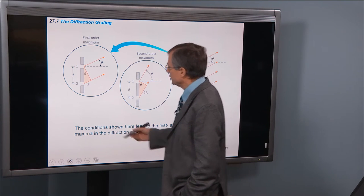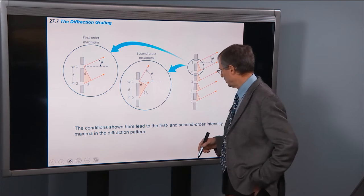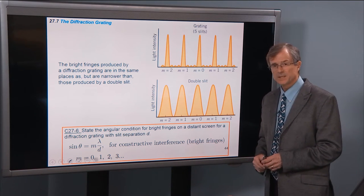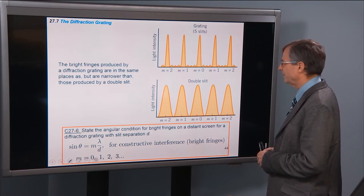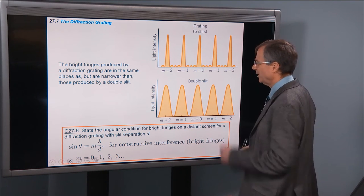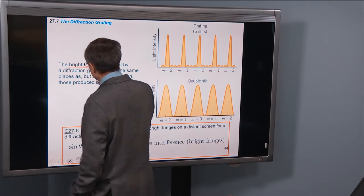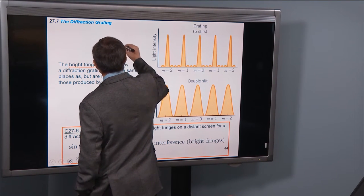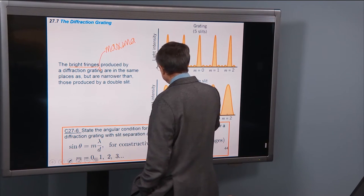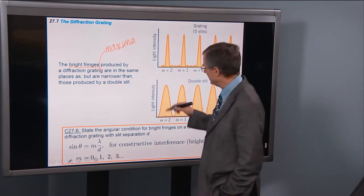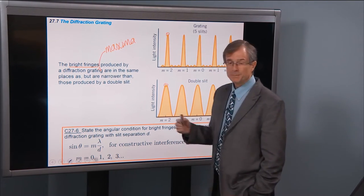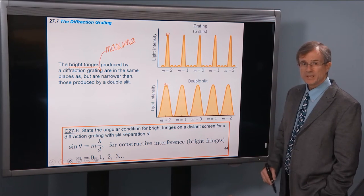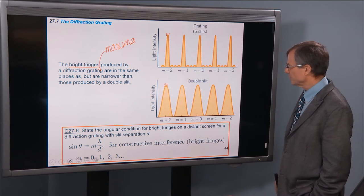Well, if we just look at two slits, then we know where the maxima and the minima are. And in fact, the maxima are in exactly the same places as they were for two-slit interference. The bright fringes produced by diffraction grating are in the same places. But sometimes in the lab, I believe the word maxima are used instead of bright fringes. Why do we call it maxima? We think of maximum light intensity. So that would be a maximum. And maxima is plural for maximum. But the bright fringes in a diffraction grating turned out to be in the same places as, but are narrower than those produced by a double slit.